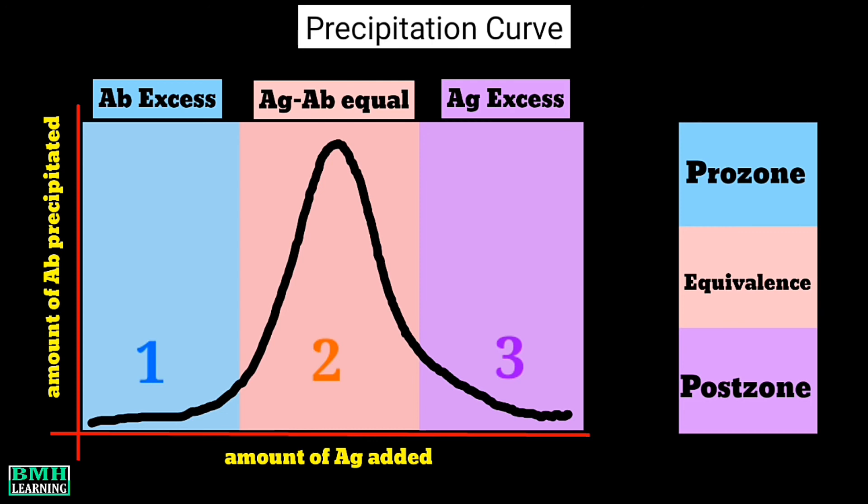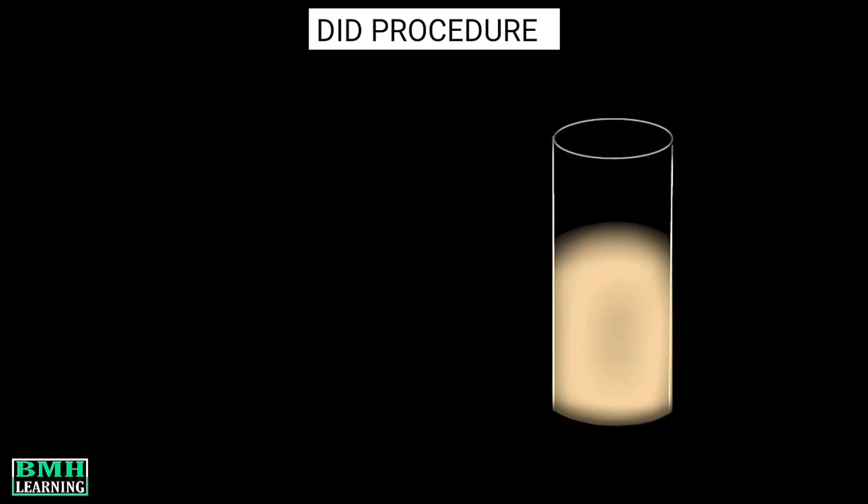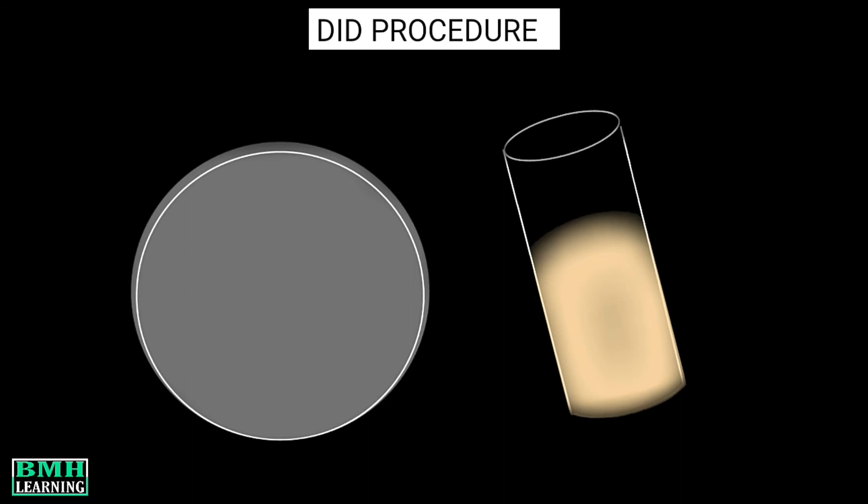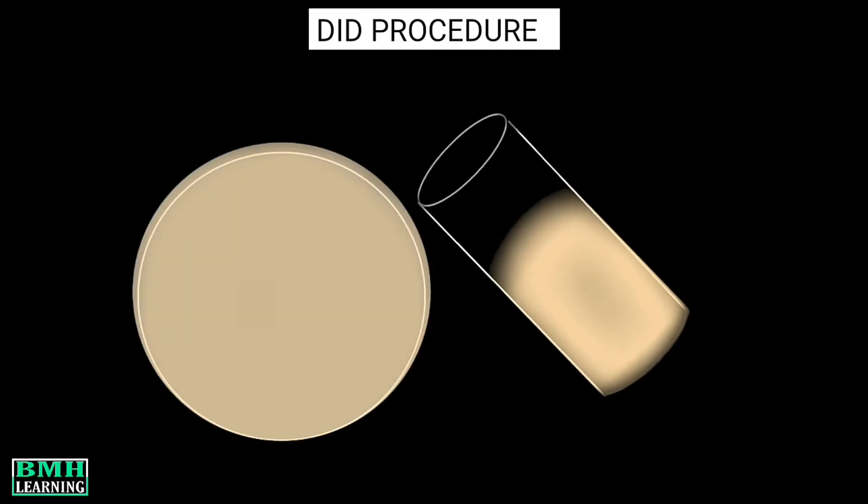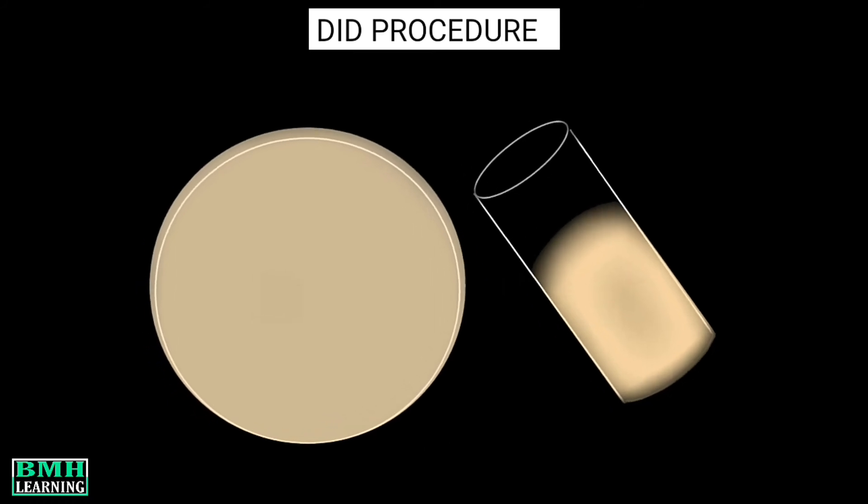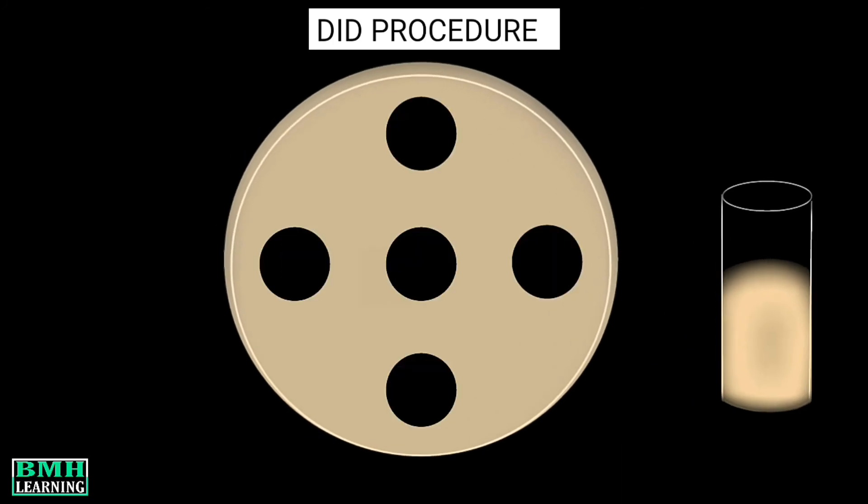Procedure of double immunodiffusion: First of all, agarose gel is prepared and allowed to get cool. The gel is then poured on the glass slide placed in a horizontal position. Then the gel is allowed to set for 30 minutes. Using the well puncher, wells are carefully cut in the agarose gel.